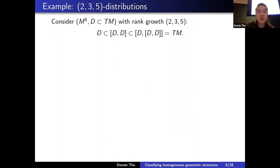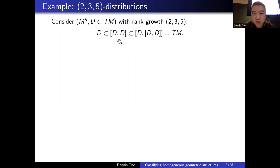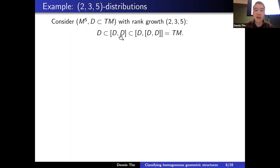Let's move to two-three-five distributions. We consider a five-manifold with a rank-two distribution with the following growth of its weak derived flag: take D bracket with itself to get the first derived, then bracket this with the original distribution D. This generates the weak derived flag — distinct from the strong derived flag where you bracket the current level with itself. The growth is two-three-five.